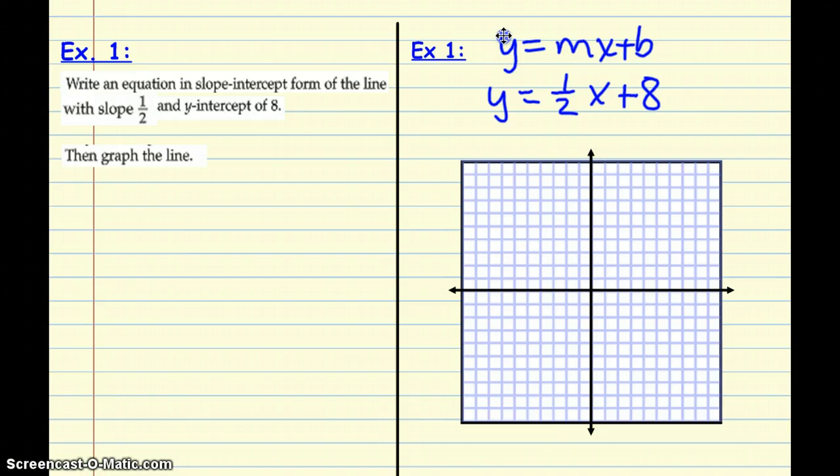So, we always want to graph the y-intercept first. So, I'm going to go up to positive 8. 1, 2, 3, 4, 5, 6, 7, 8. Put my dot right on that y-axis, and my slope is 1 half, which means my rise is 1, and my run is 2.